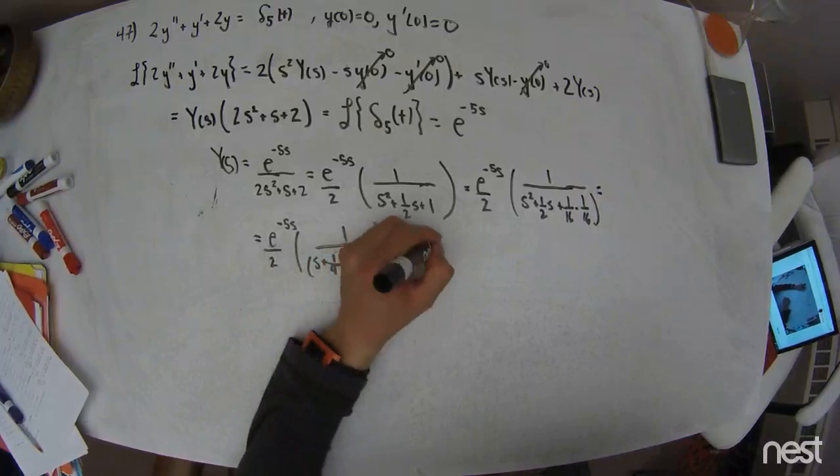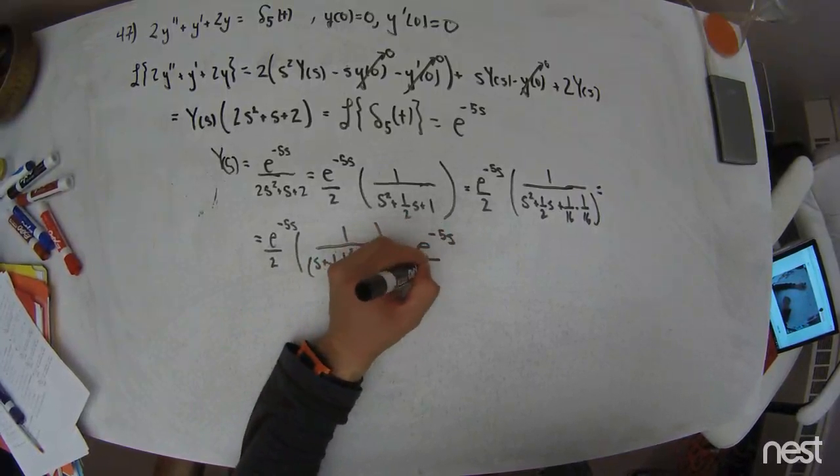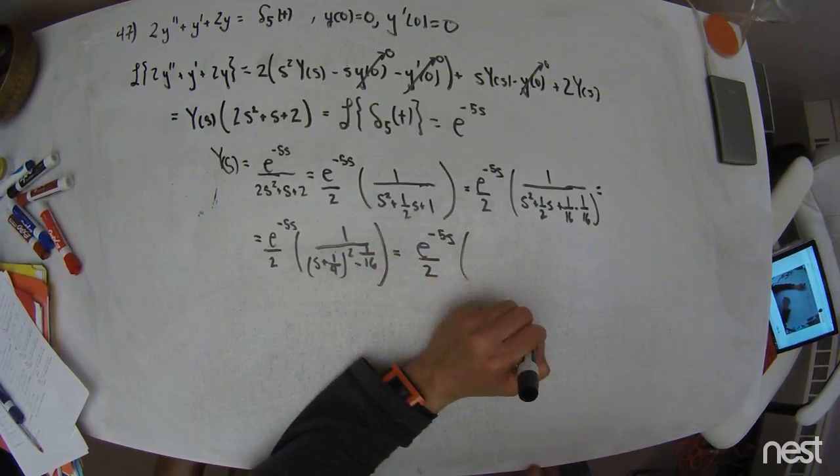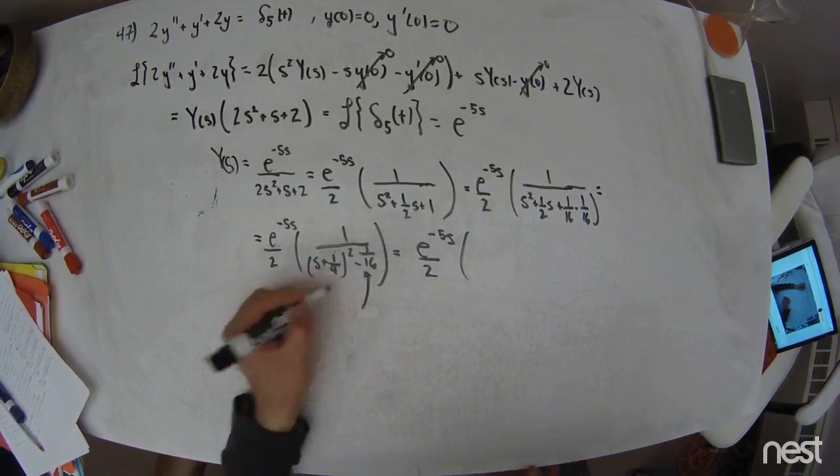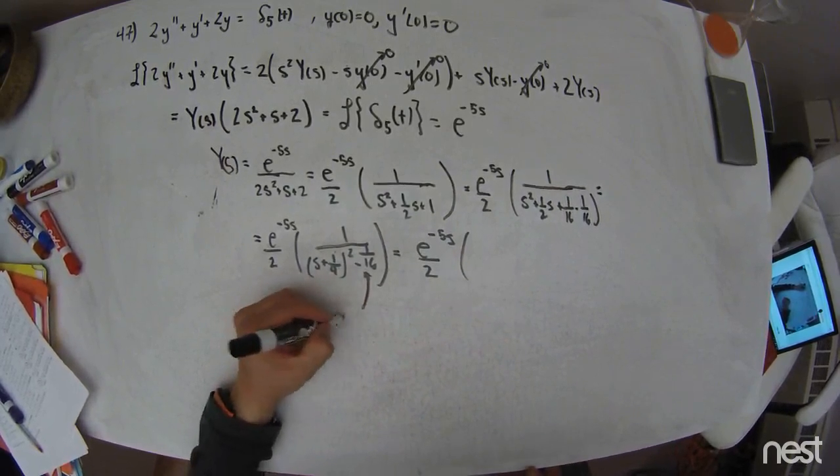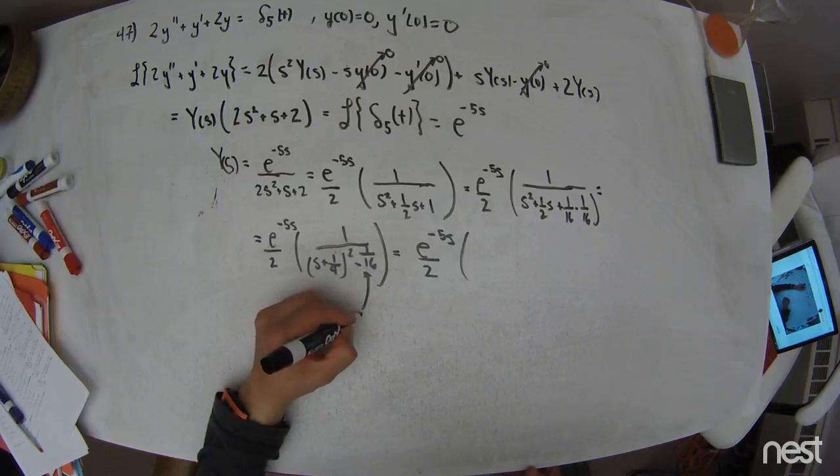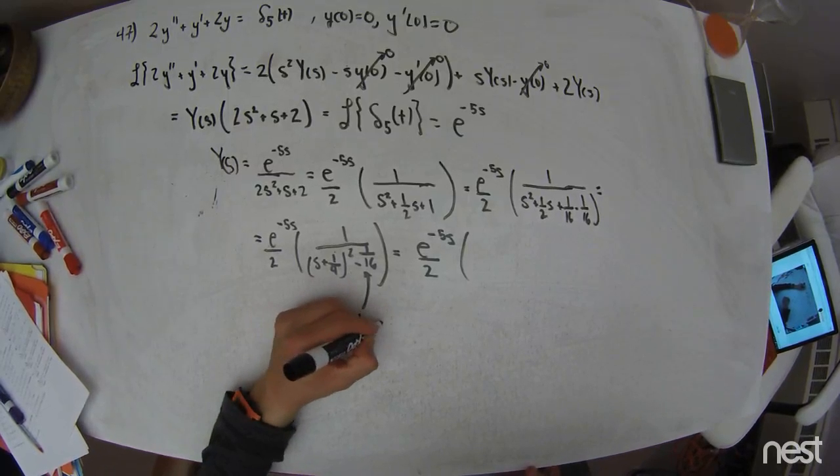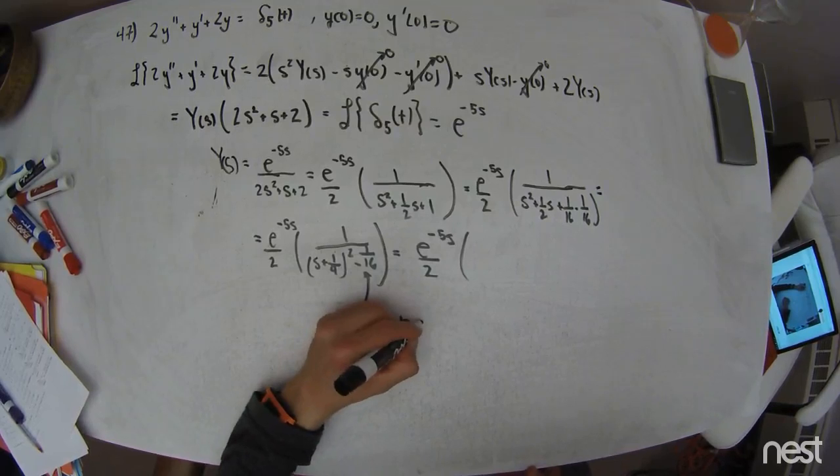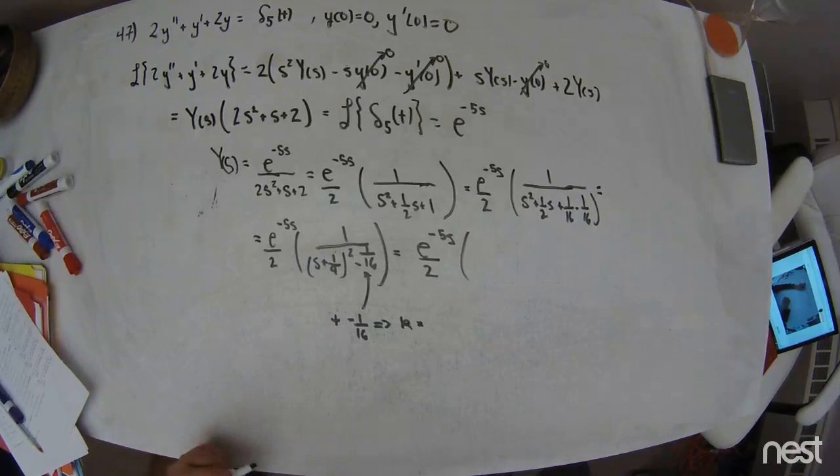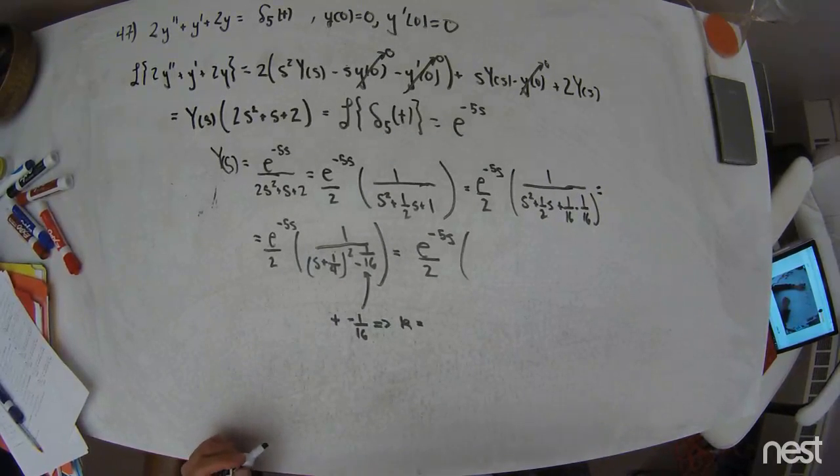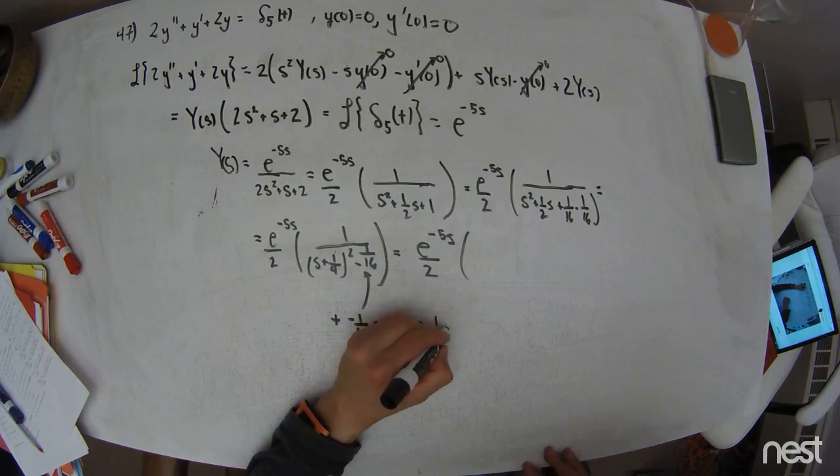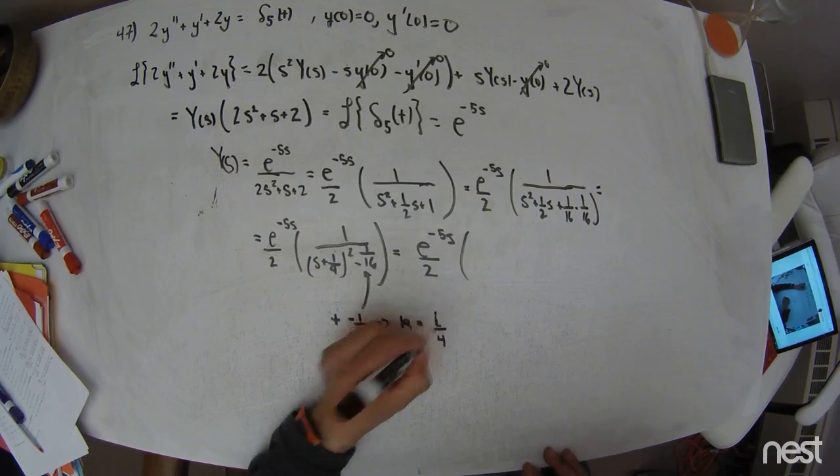So this is going to be e to the negative 5s over 2 times this part right here. I need it to be plus negative 1 sixteenth. So that would mean that my k value is equal to what's up here? Well, k squared is negative 1 sixteenth, so k is equal to 1 fourth i, right?